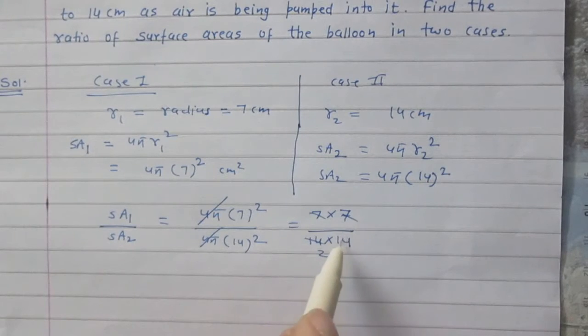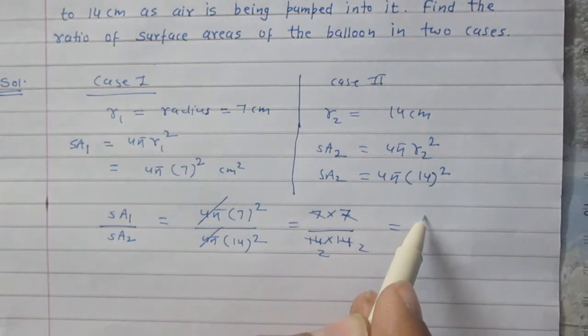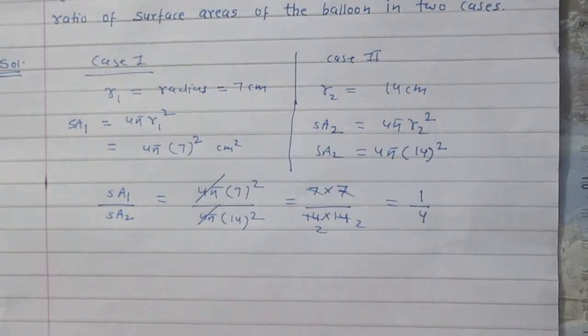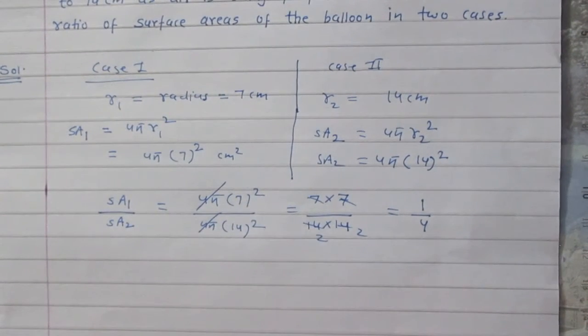So finally we get 1/4. We can say that the ratio of their surface areas is 1:4.